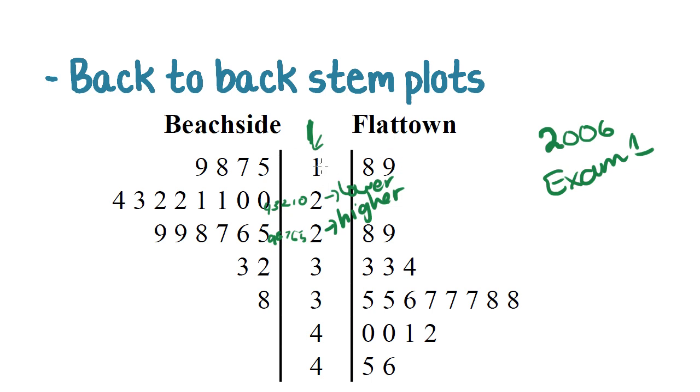So they've got a higher 1, a lower 2, a higher 2, a lower 3, a higher 3, a lower 4, a higher 4. And those are their split stems.